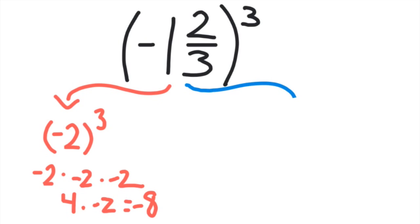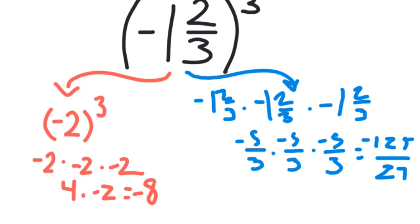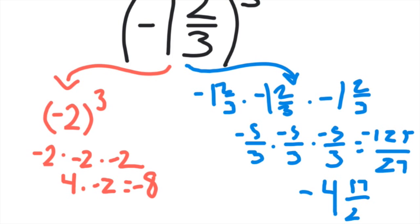Now let's find the answer to the original problem. We're going to do -1⅔ × -1⅔ × -1⅔. When you multiply mixed numbers, you need to change them to improper fractions first. So this is really going to be -5/3 × -5/3 × -5/3. That equals -125/27. -125/27 is improper. 27 goes into it 4 times with a remainder of 17/27. So the final answer is -4 and 17/27.